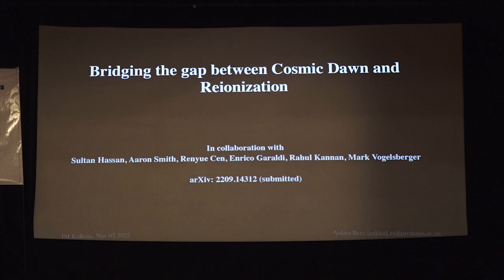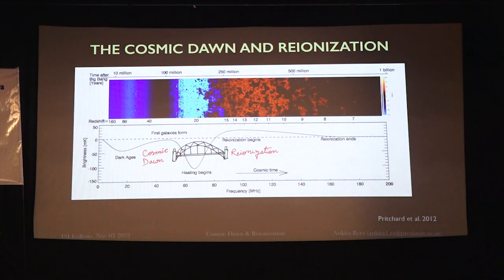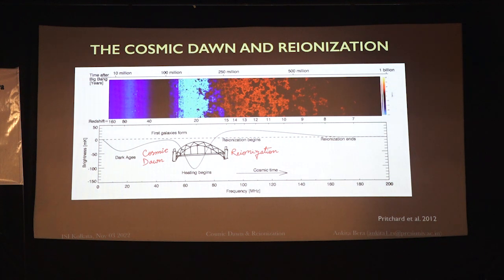In this second work, we took the Cosmic Dawn constraint from EDGES along with other observations from reionization and post-reionization, and tried to infer the conditions required to bridge the gap between these different observational constraints.